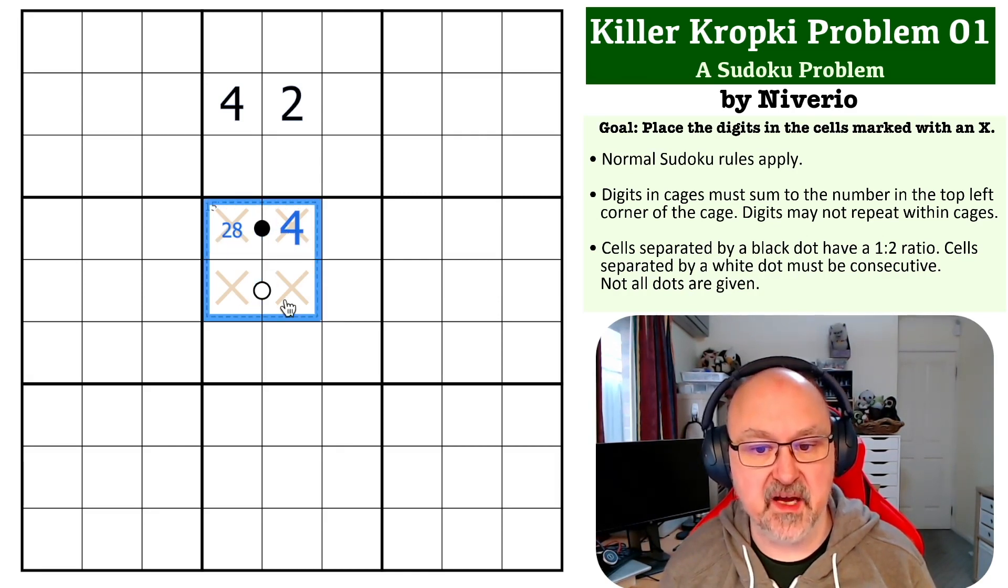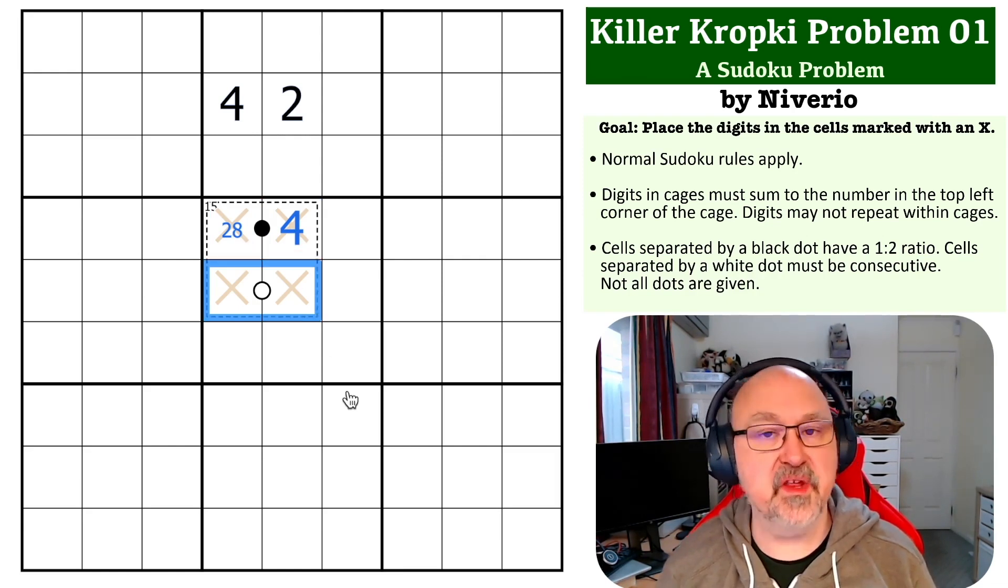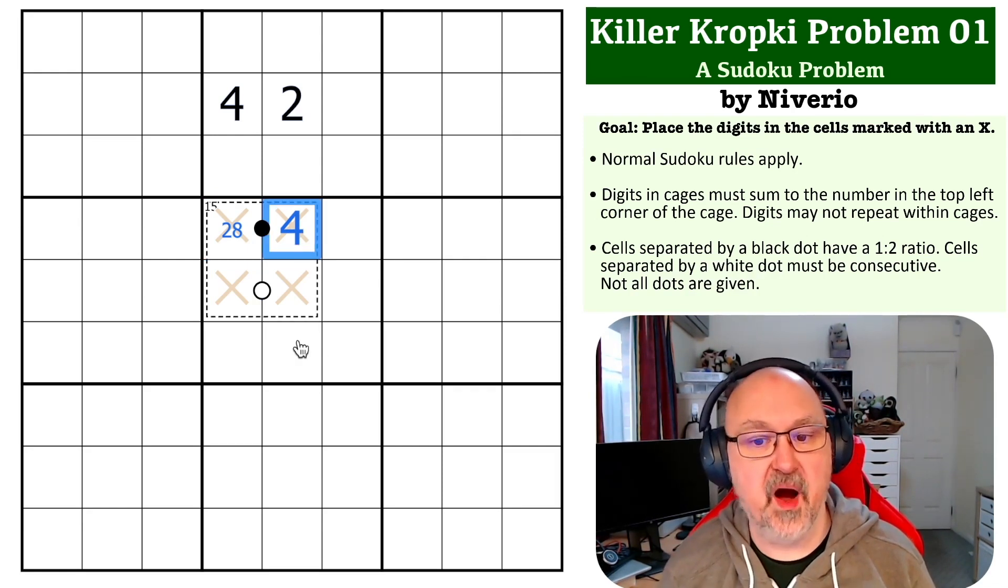Then we can start thinking about totals. Well, if this is four-two, then we've got six of the fifteen. These would have to sum to nine, but the only way you can get to nine with two consecutive digits is four-five, and we can't use the four because the four is already gone.